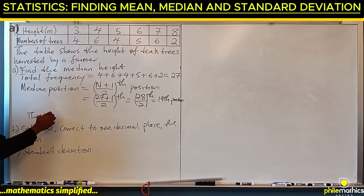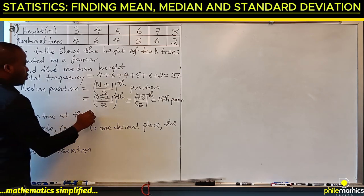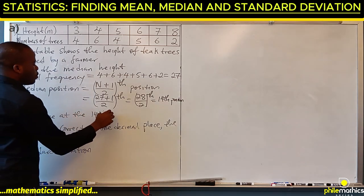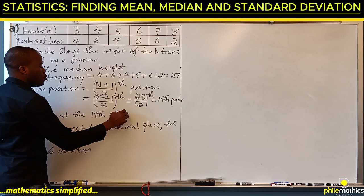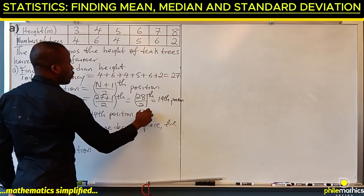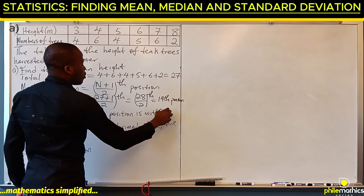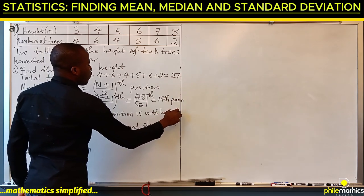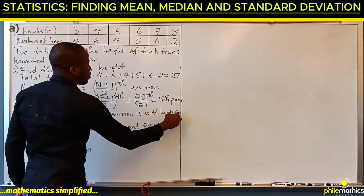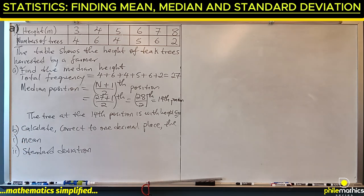The tree at the 14th position has a height of five meters. Therefore, five is the median. The second thing we are asked to find is the mean and the standard deviation.